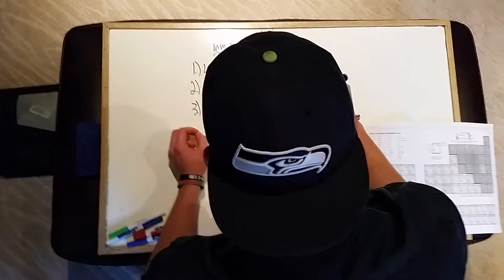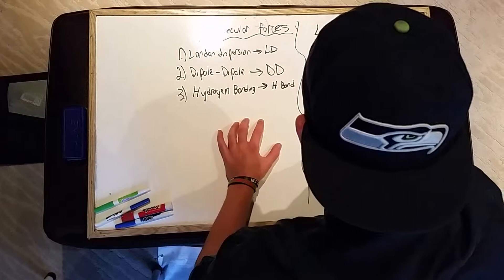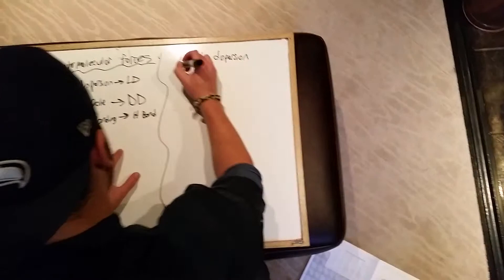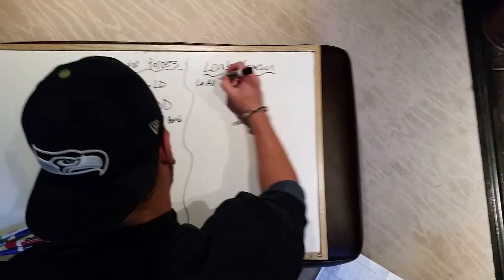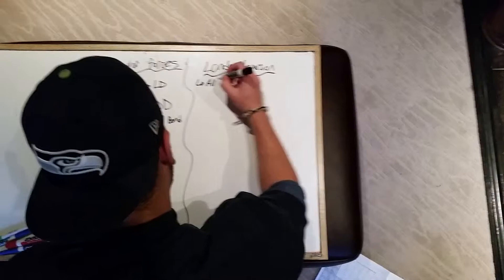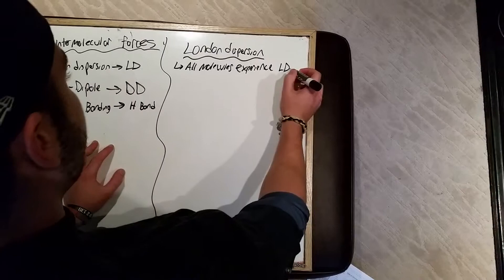Now that we know the three types, let's go over the first type, called London dispersion. All molecules experience London dispersion.